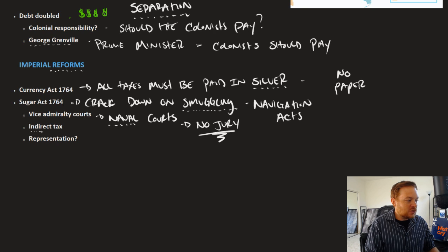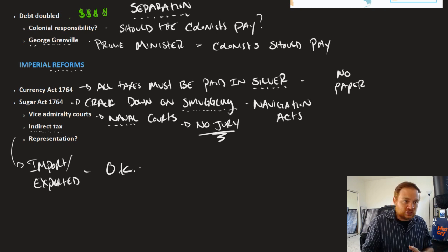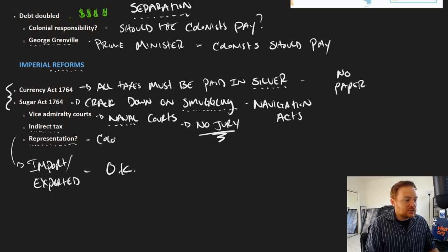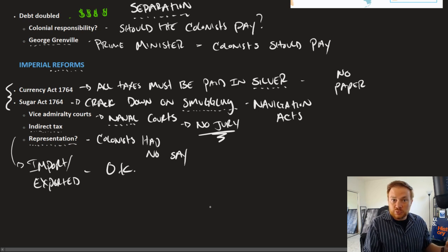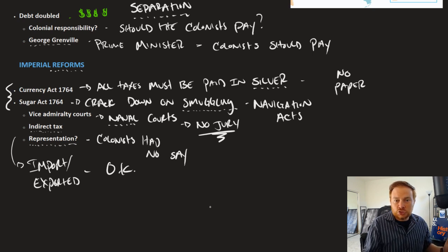The Sugar Act itself was an indirect tax, meaning it only taxed things that were imported or exported. For the most part, colonists were okay with this, because they believed that anything inside the colonies they had the right to tax. But once goods left the land of the colony and entered the water, colonists more or less recognized that Parliament had the right to rule the ocean. However, it brought up the question of representation — because with both the Currency Act and the Sugar Act, the colonists had no say in either matter, raising the question of whether colonists should have representation in decisions about the proclamation line, currency, and trade laws.